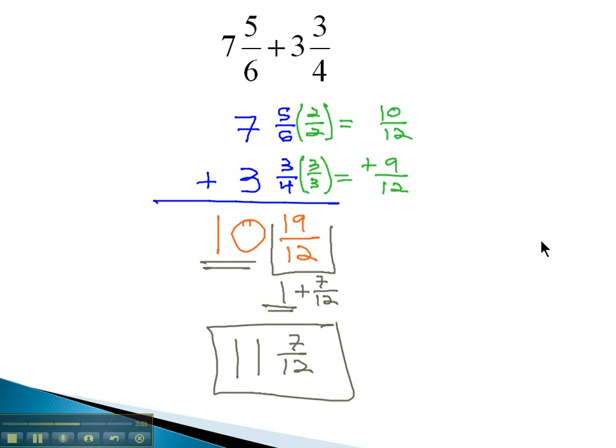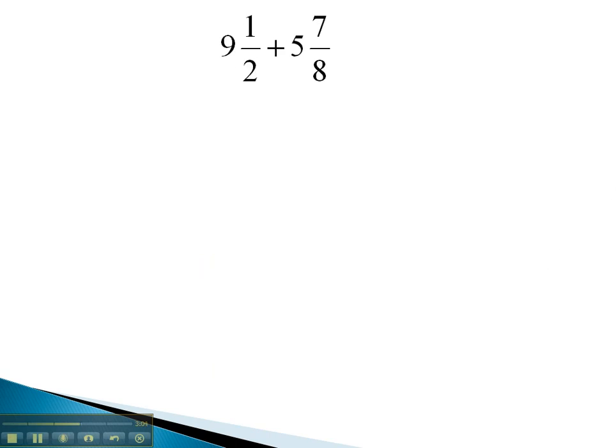Let's try this with one more example. Here, we're adding 9 and 1 half plus 5 and 7 eighths. Again, to add the fractions, we need a common denominator, which will be 8.